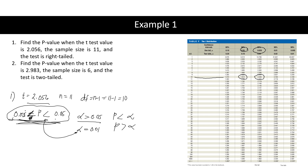For number two: find the probability when the t-test value is 2.983, the sample size is 6, and the test is two-tailed. Remember there are two confidence interval types: one-tail and two-tail. The test value is 2.983 and n = 6, so df = 5. We look for the closest value to 2.983, which falls between 2.571 and 3.365.